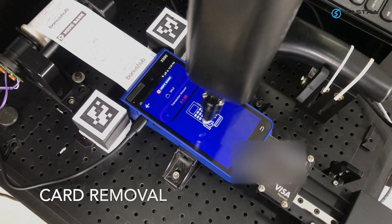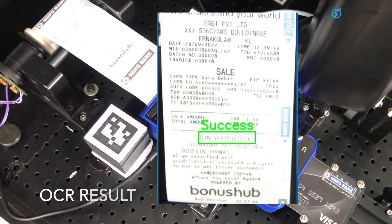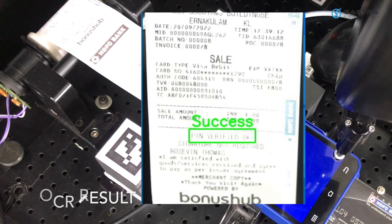The receipt printed is captured using a vision camera. Using the vision system, the image is validated for a success or fail scenario.